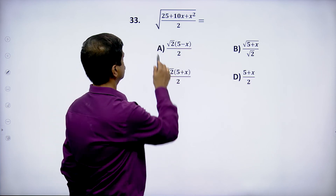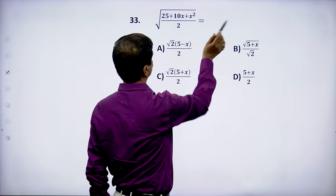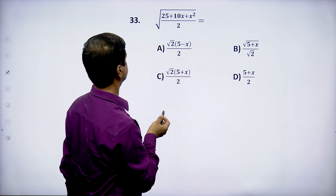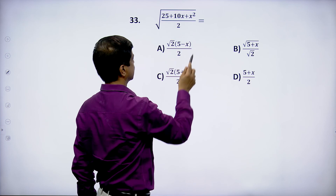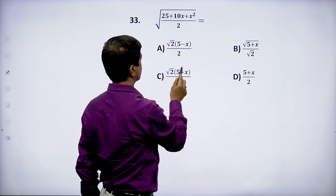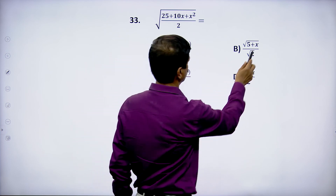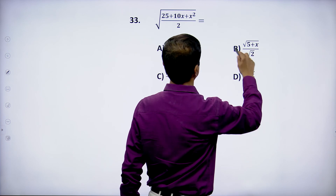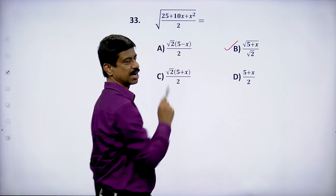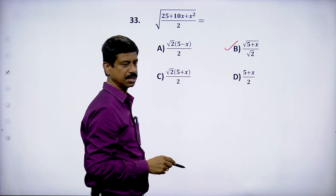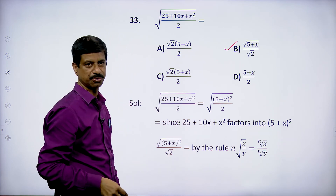Simplify √(25 + 10x + x²) / 2. The numerator under the root is (x+5)², so √(x+5)² = (x+5). Therefore the expression = (x+5) / √2 (since root applies to numerator and denominator). Please note the option directly.